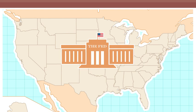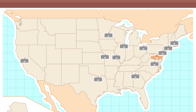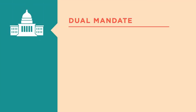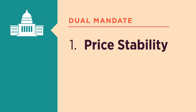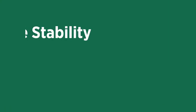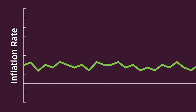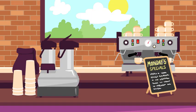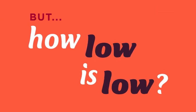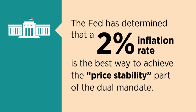In modern economies, the central bank influences the nation's money supply. The Federal Reserve is the central bank of the United States. Congress has given the Federal Reserve a dual mandate — the Fed is to achieve two economic goals: one, price stability, and two, maximum employment. Price stability is a low and stable rate of inflation maintained over an extended period of time. The Federal Reserve has determined that a 2% inflation rate is the best way to achieve the price stability part of the dual mandate.